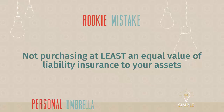The rookie mistake of this video: not purchasing at least an equal value of liability insurance to your assets. Think about your financial picture — the value in your home, stocks, retirement fund, all the things you've built financially for your family. Total that up and look at your insurance policy. Make sure your liability limits across home, auto, and personal umbrella — if you add one — add up to at least what you have in assets.